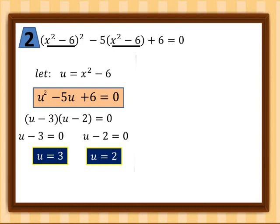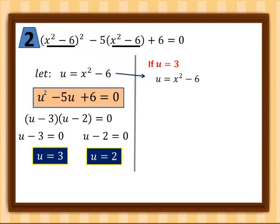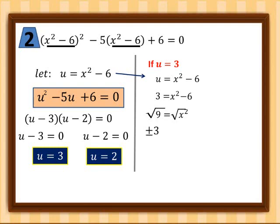We use these u values to solve for x. If u equals three, substituting into u = x² - 6 gives three equals x² - 6. Transposing negative six, we get x² equals nine. Taking the square root of both sides, the square root of nine is positive and negative three, so x equals positive and negative three.